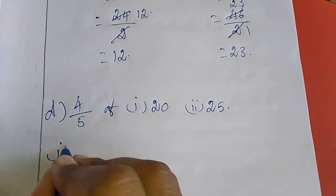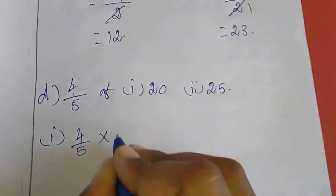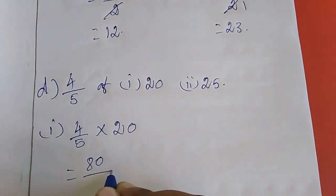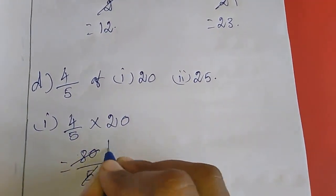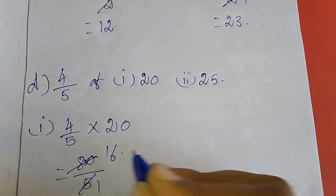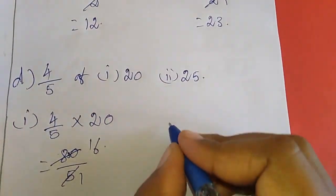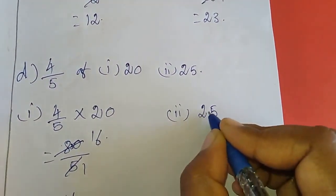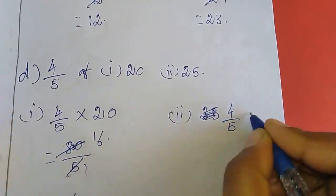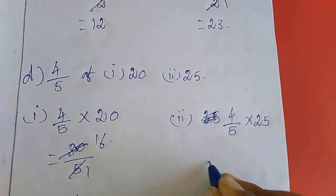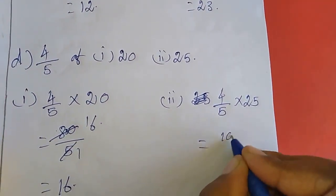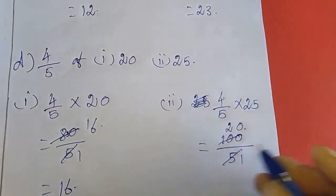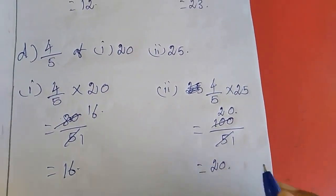First one: 4 by 5 of 20. So 80 by 5 — if you cancel you will get 16. So the answer is 16. Next, for the second: 4 by 5 of 25. If you multiply you will get 100 by 5. Cancelling this, you will get 20. So the answer is 20.